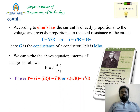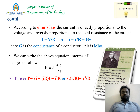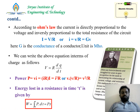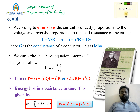Power P = V × I. Substituting V = IR, we get P = I²R or P = V²/R. I²R is generally used for power loss. Energy lost in a resistance in time t is given by W = ∫P dt = P × t = I²Rt or V²t/R.